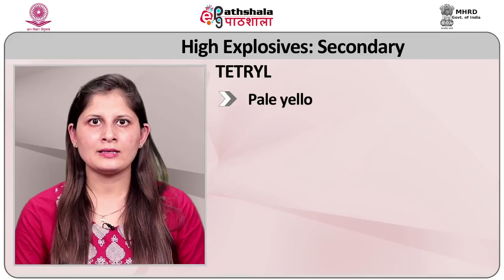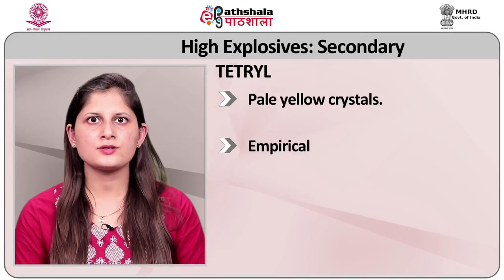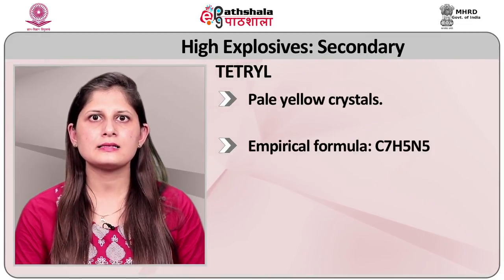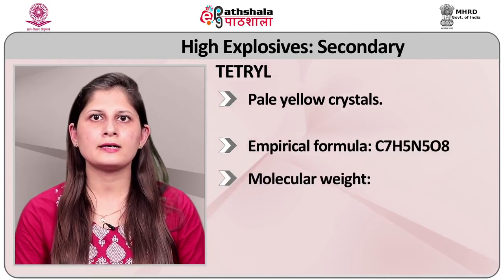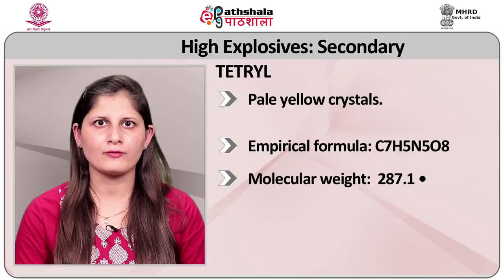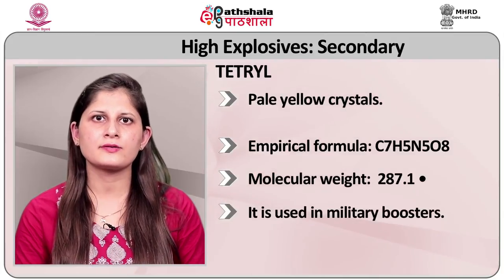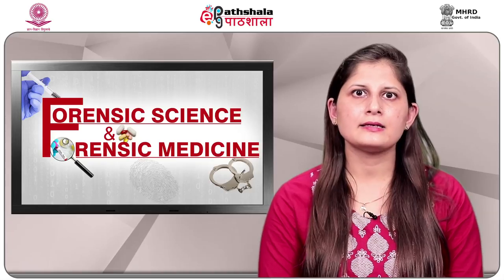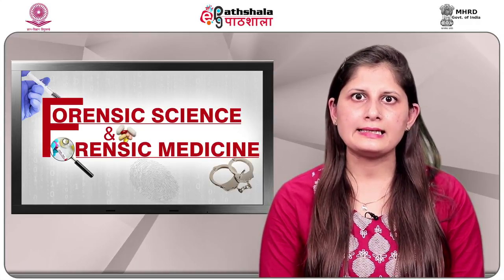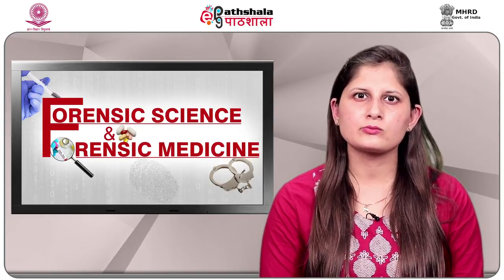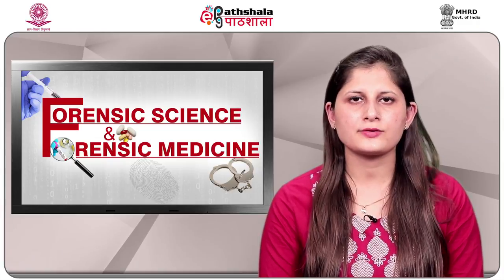Tetryl: it is 2,4,6-trinitrophenyl methyl nitramine. It is pale yellow in color and crystalline in nature. Empirical formula is C7H5N5O8. Molecular weight is 287.1. It is used in military boosters. Practically insoluble in water; sparingly soluble in alcohol, ether, and benzene; and more readily soluble in acetone.